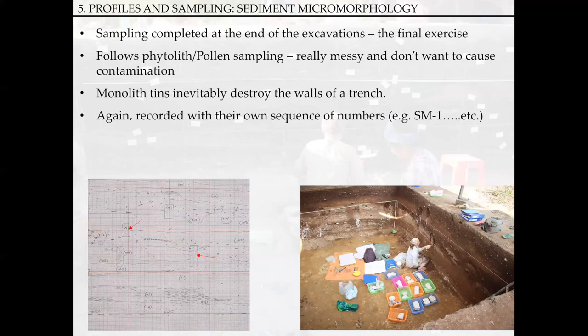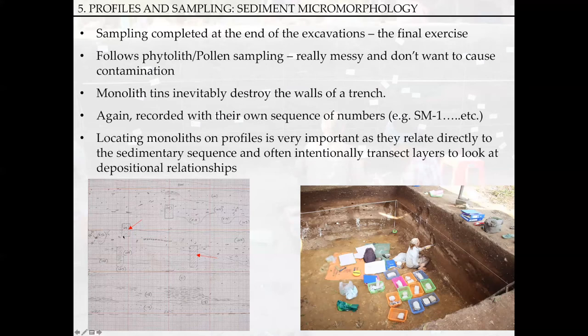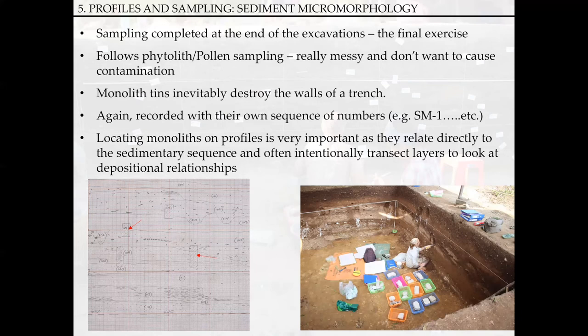The monolith tins are recorded with their own sequence of numbers — for example, SM1 for soil micromorphology sample one. You can see we've located the monolith samples with their sample numbers, and you can see where they actually potentially intersect different deposits, because the micromorphologist really wants to know the relationships between these different deposits. That gives them a better idea of how the sequence has developed. Locating your monoliths on the profile drawing is very important — they directly relate to the sedimentary sequence, so the micromorphologist can relate back to the profile drawings and see exactly what deposits they've excavated through.